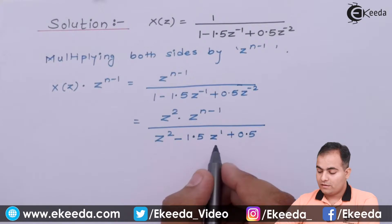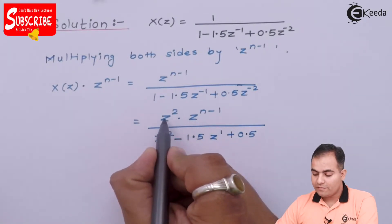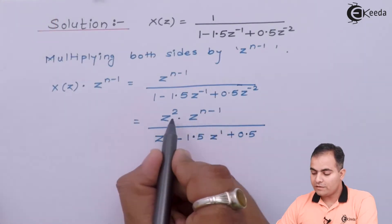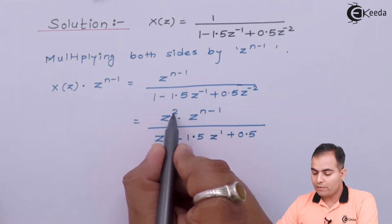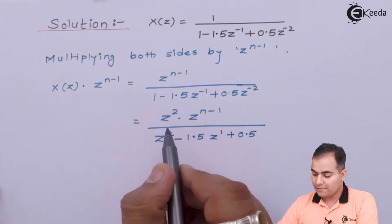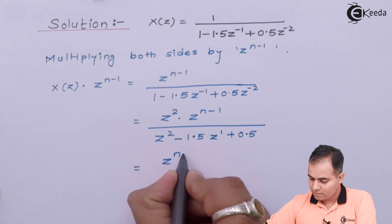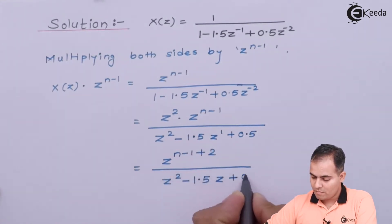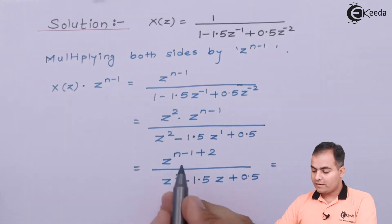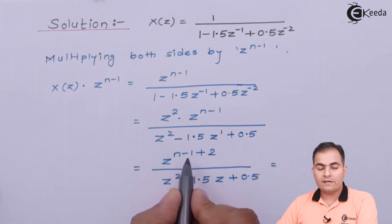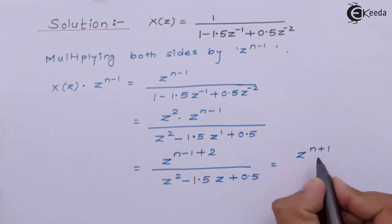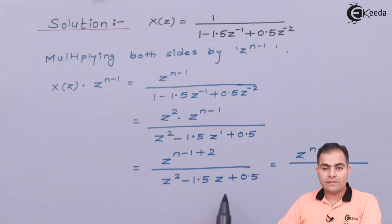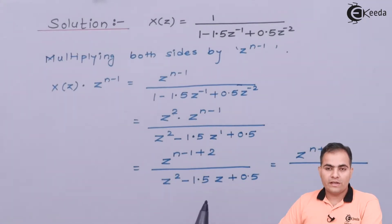In the numerator we have Z² multiplied by Z^(n−1). Since the bases are the same we add the exponents: n−1+2 gives n+1. In the denominator we have Z² − 1.5Z + 0.5, which we will now factorize.